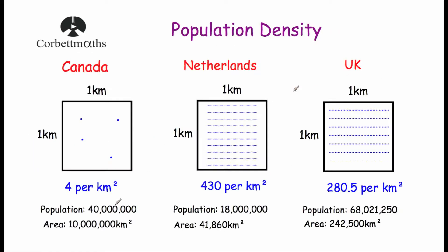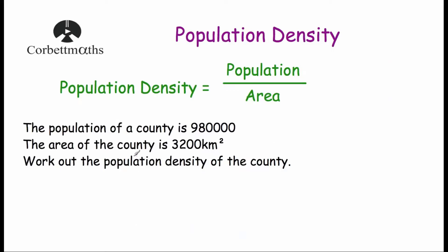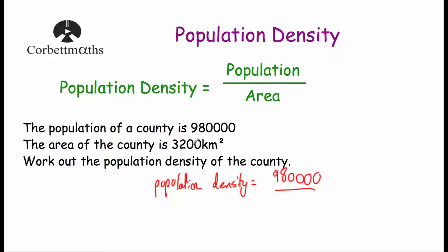Our first question says: the population of a county is 980,000, and the area of the county is 3,200 kilometres squared. Work out the population density of the county. Population density equals population divided by area, so that's 980,000 divided by 3,200, which equals 306.25 per kilometre squared.